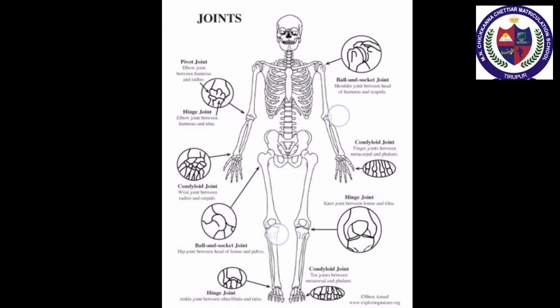Depending on the type of movement they allow, joints can be of three types: immovable, slightly movable, and movable. Immovable joints: in this type of joint, no movement is possible between the two bones. The structures between the bones of the skull box are examples of immovable joints.